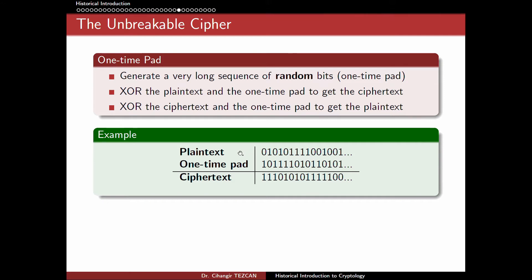The idea is: you write your plaintext in zeros and ones, write your one-time pad here, and perform the XOR operation. XOR means exclusive OR, and it is actually addition in modulo 2. It works like a normal addition — 0 XOR 1 is 1, 1 XOR 0 is 1, 0 XOR 0 is 0, and 1 XOR 1 is 0. There are no carry bits, so every column only affects itself and does not affect anything on its right or left.